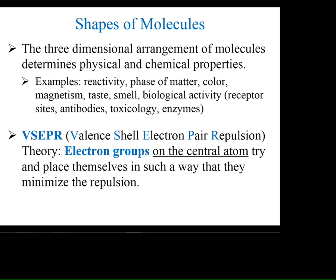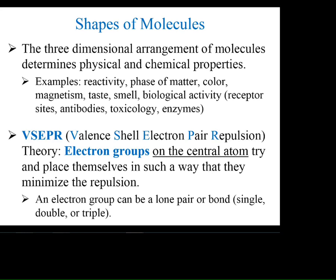We're going to zero in on the center atom and spread the electrons around it as evenly and as far apart as we can. What you're going to focus on are these things called electron groups. An electron group could be just a lone pair on the center atom, or an electron group could be any kind of bond — single, double, or triple. A single bond is still one group of electrons. A double bond is not two groups — it's still one group. A triple bond is not three groups — it's still one group of six electrons.